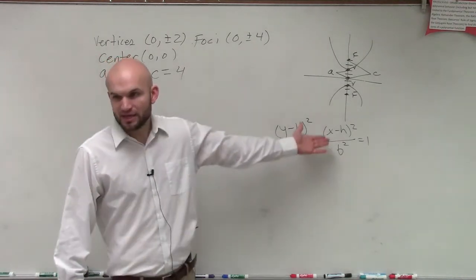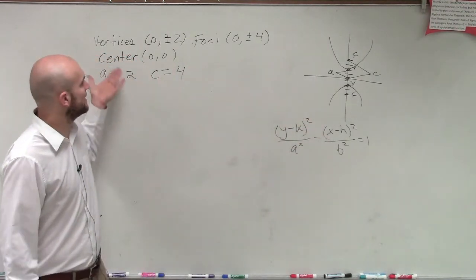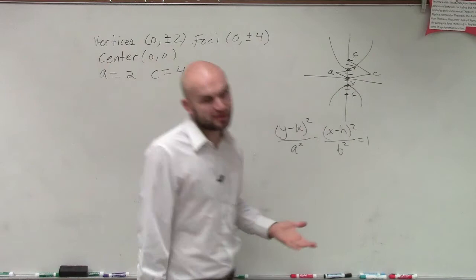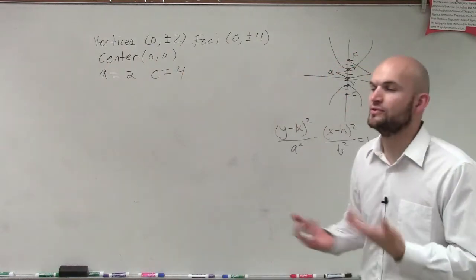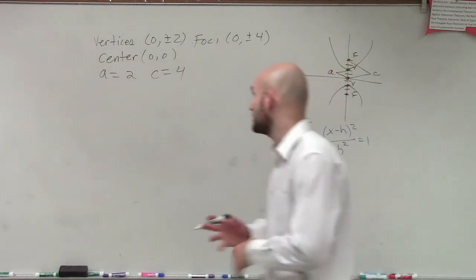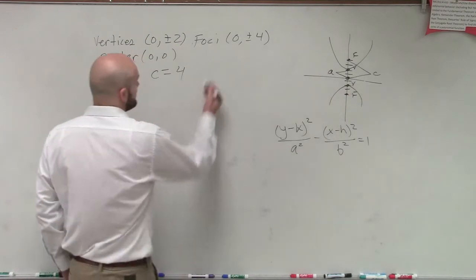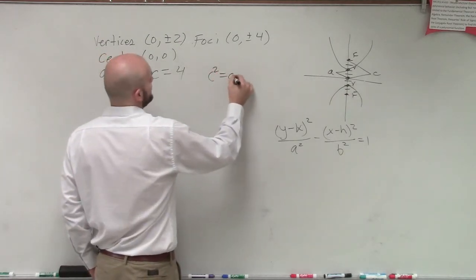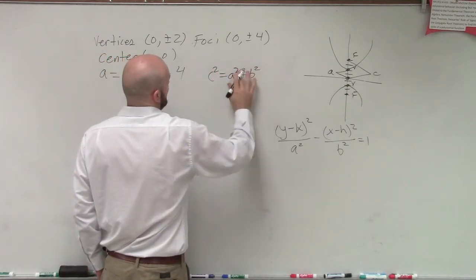So the last thing I need to do is figure out b. So we go back to our formula and say, all right, I know a, I know c, but remember, to find b, we need to see how a, b, and c relate to each other. Well, since this is a hyperbola, we know that c² = a² + b².